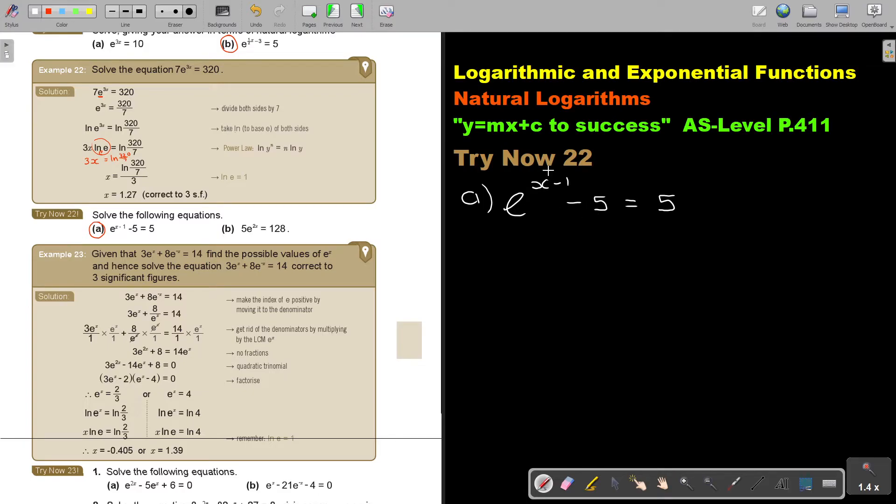So basically I first going to isolate this. So I'm going to take this 5 over. So I add 5 on both sides. So basically I get 10.